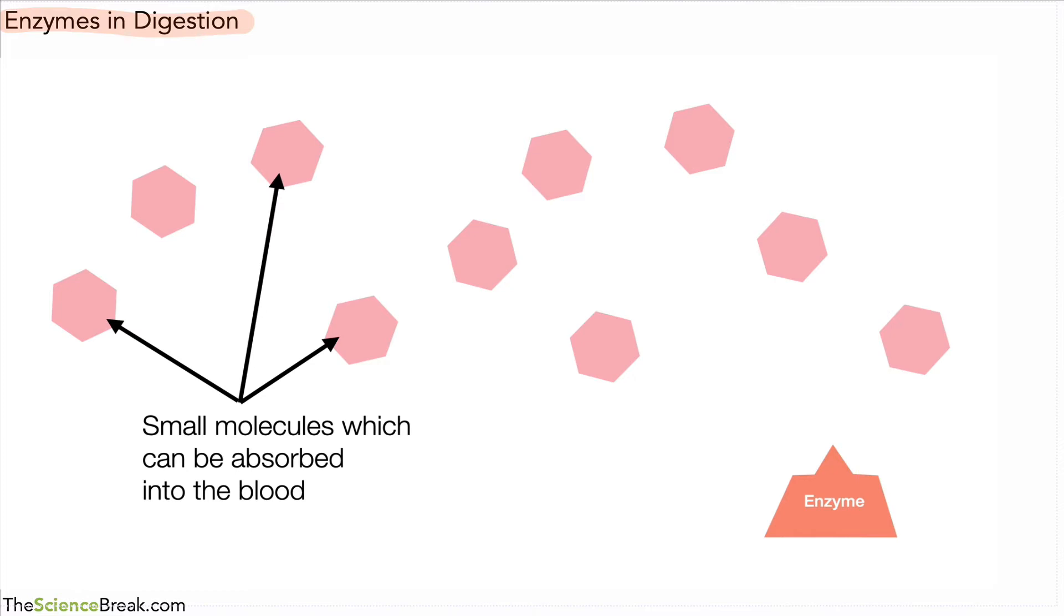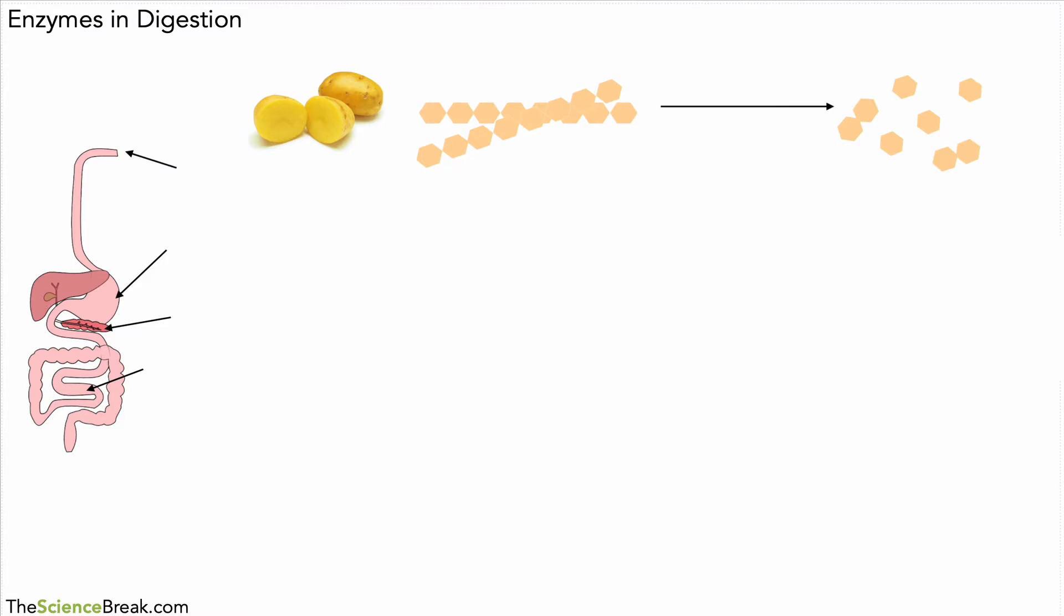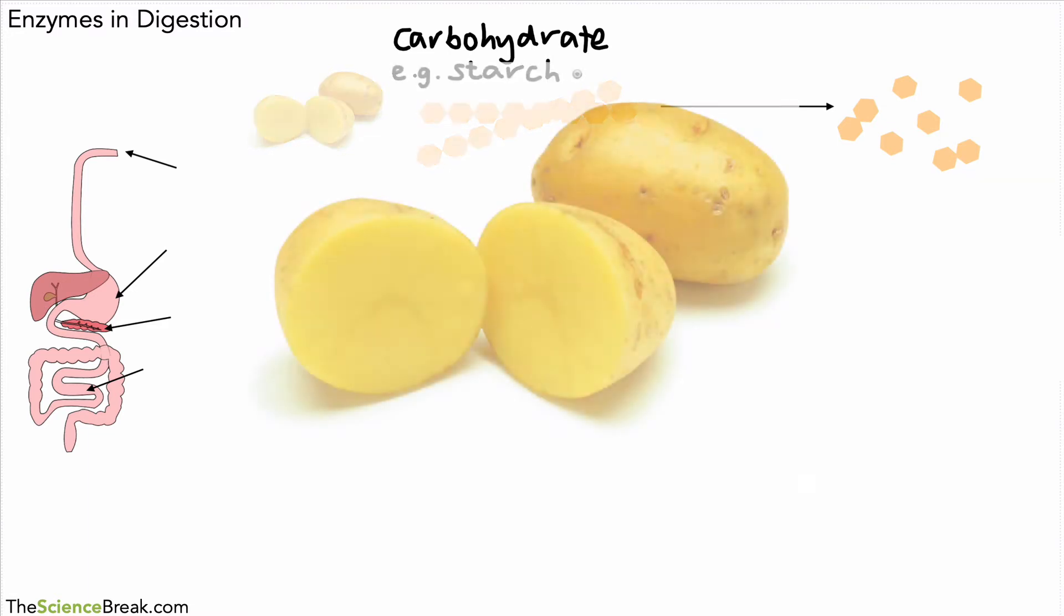Let's make a little note of that, plus the other enzymes that we're going to look at. Here we've got a little diagram of the digestive system, but we can ignore that for now. We've got our carbohydrates there, those kind of chains that we just looked at, and one example of that is starch. Starch is an example of a carbohydrate found in potatoes.